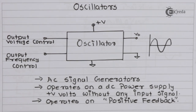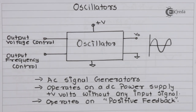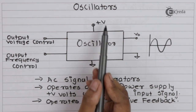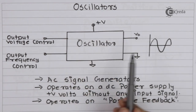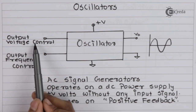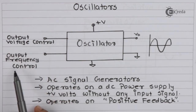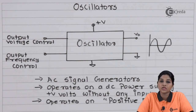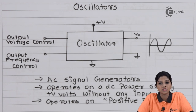Looking at the block diagram of the oscillator, we see that it requires a plus DC supply of plus VV, it produces output, and it has output control voltage and output frequency control. Importantly, in an oscillator there is no external AC input signal. Therefore, we can say an oscillator is basically a circuit which produces output oscillations without any AC input signal.